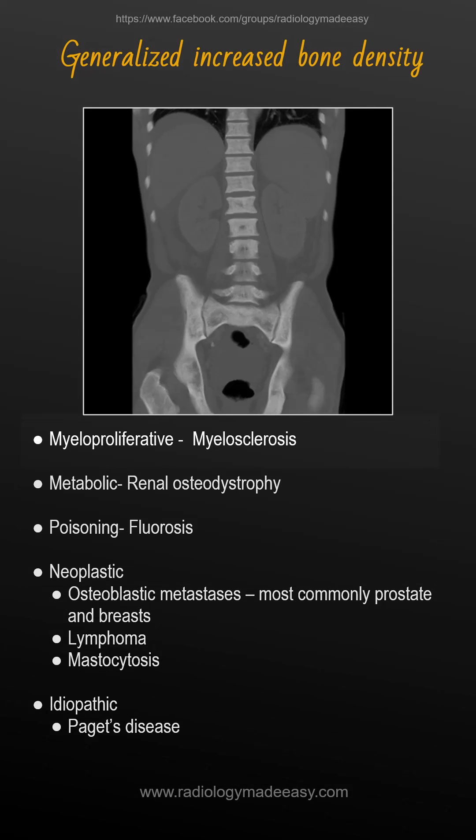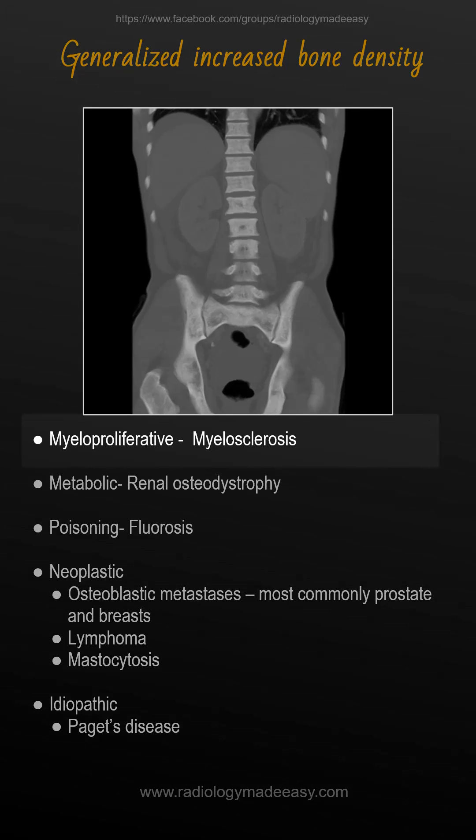Due to myelosclerosis, the bone marrow cavity is narrowed by endosteal new bone formation, with patchy lucencies due to persistence of fibrous tissue. It is associated with hepatosplenomegaly.